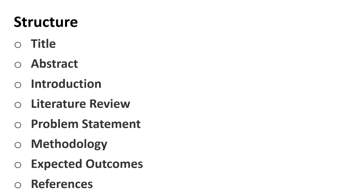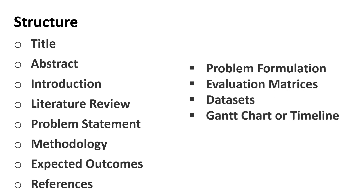The typical structure of a research proposal includes title, abstract, introduction, literature review, problem statement, proposed methodology, expected outcomes, and references. Sometimes we also need problem formulation, evaluation matrices, data sets, and a Gantt chart or timeline. We will follow a different order — the title and abstract will be at the end.